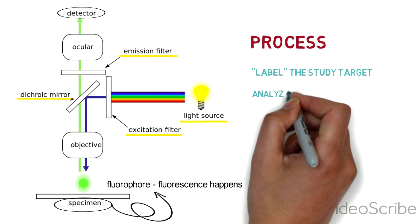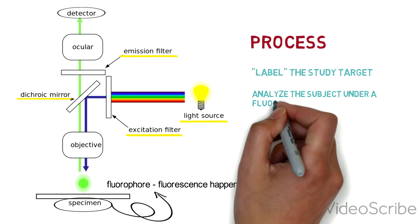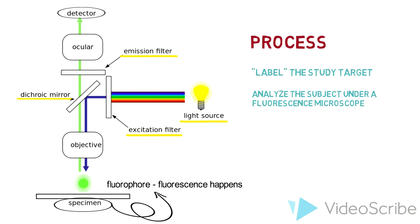Secondly, analyze the subject under a fluorescence microscope. As explained previously, by beaming the specimen with light with appropriate wavelength, the label can express the fluorescence effect and become clearly visible. Using this label, we can detect where the subject is and how it acts.